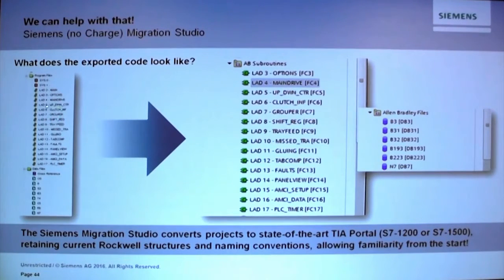All your LAD files take the same exact names and they reside over here in a subroutine called AB subroutines. These LAD files are the functions that Robert was talking about. All your data files come over as well into something we call data blocks.